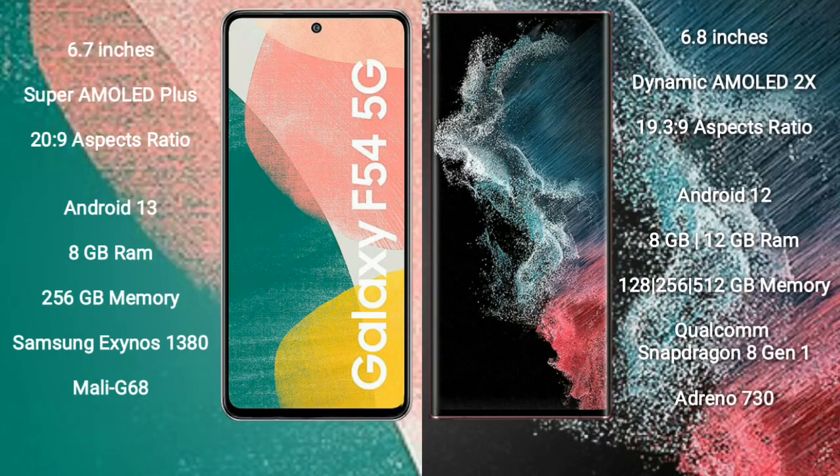Samsung Galaxy A54 comes with a 6.7-inch Super AMOLED Plus display. Samsung Galaxy S22 Ultra comes with a 6.8-inch Dynamic AMOLED display.